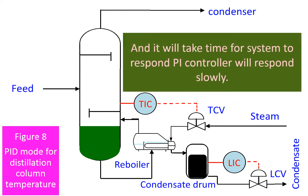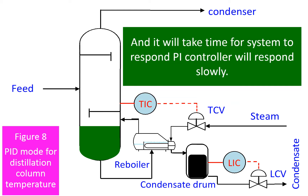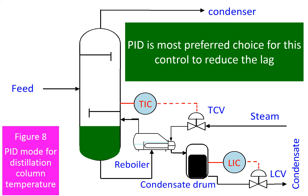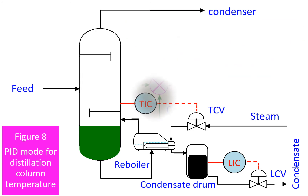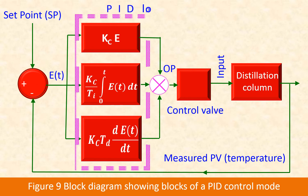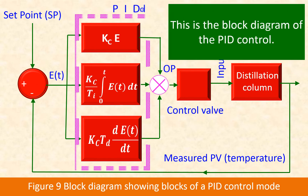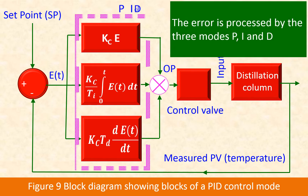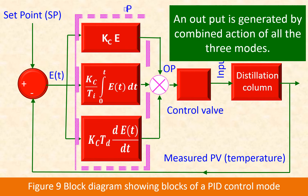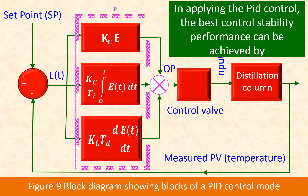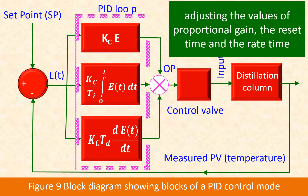PID control will respond to this slow process, and PID is the most preferred choice for this column control to reduce the lag. This is the block diagram of the PID control — the error is processed by the three modes P, I, and D, and an output is generated by the combined action of all three modes. In applying PID control, the best control stability performance can be achieved by adjusting the values of the proportional gain, the reset time, and the rate time.